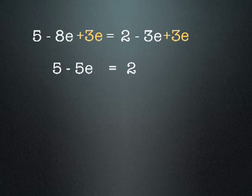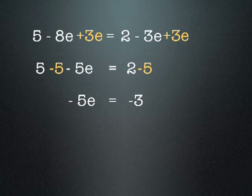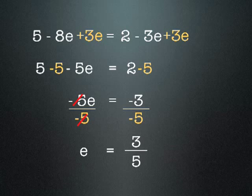Now we need to get rid of that 5 on the left. It's a positive 5, so we minus 5 from both sides. 5 take away 5 equals 0, so the next line of our equation is negative 5e equals negative 3. Now we need to get rid of the negative 5, so we divide both sides by negative 5. The negative 5s cancel out on the left, and negative 3 divided by negative 5 — two negatives make a positive — so e equals 3 divided by 5.